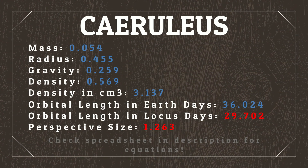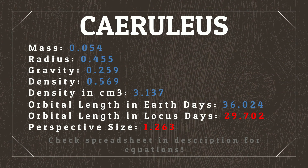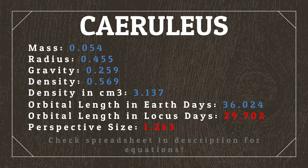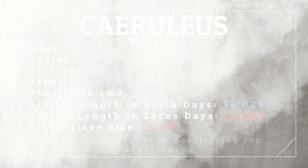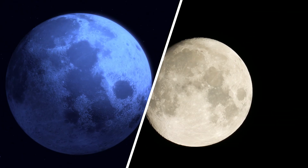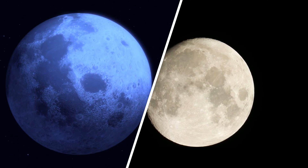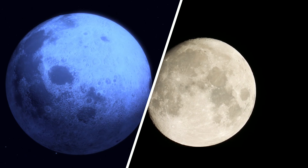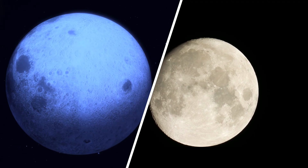From here, we can determine all the other relevant information about the moon, paying particular attention to its orbital length in days and its perspective size. Ceruleus is going to orbit Locusts every 29.7 days, and it's tidally locked, meaning that the same side of Ceruleus is going to be always facing Locusts, just like our moon and Earth. Its perspective size is how big it appears compared to how big the moon appears on Earth, which we can see is around 20% larger.